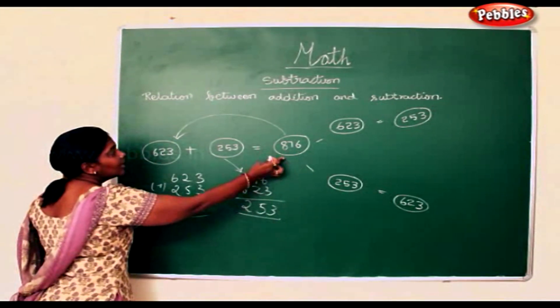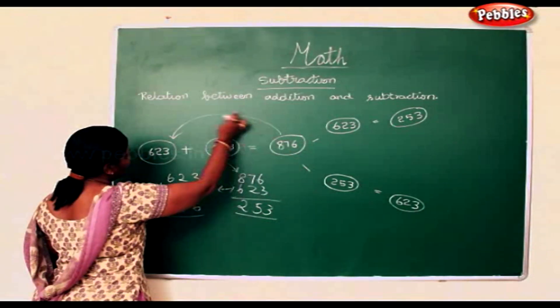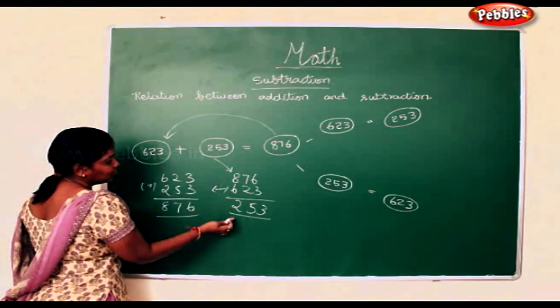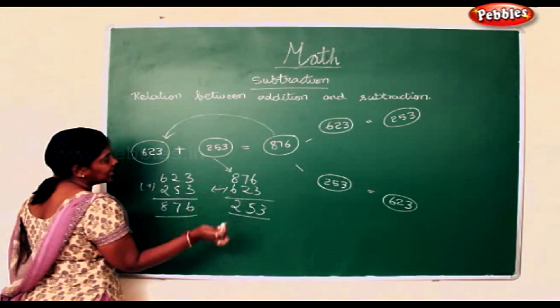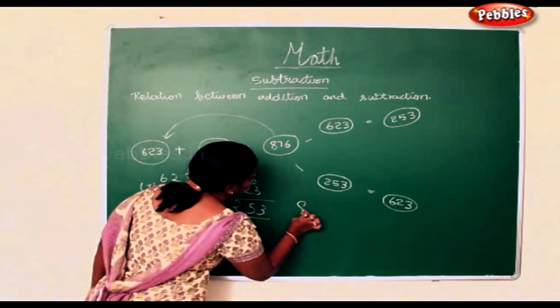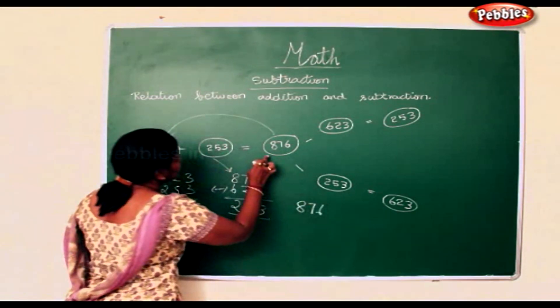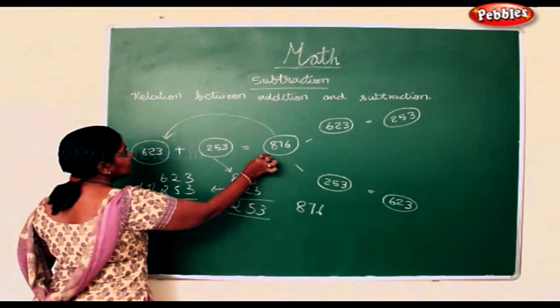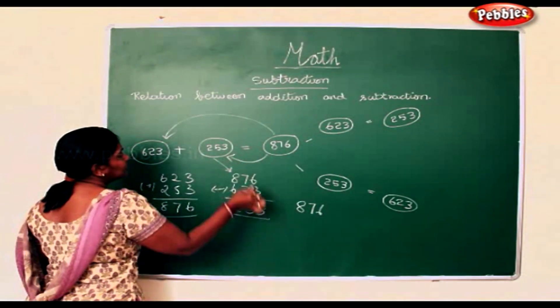I have subtracted 876 from 623, so you get 253 as the answer. In the same way, you take 876 and subtract 253.